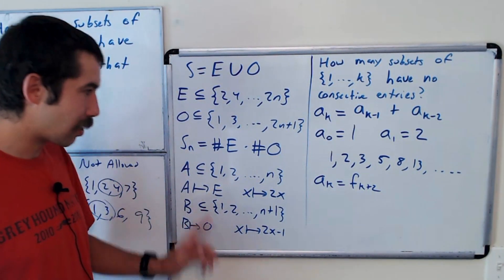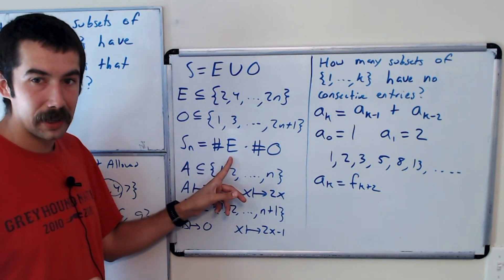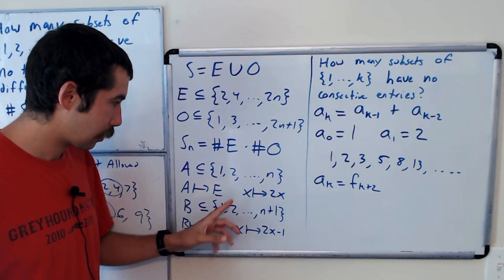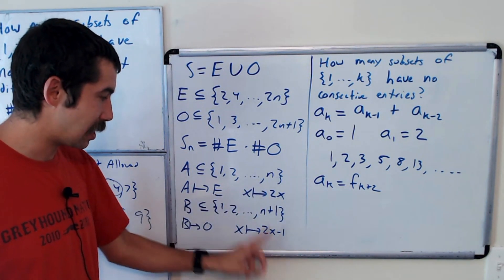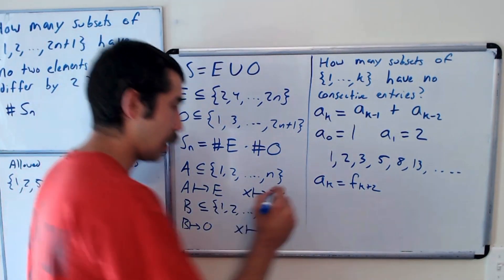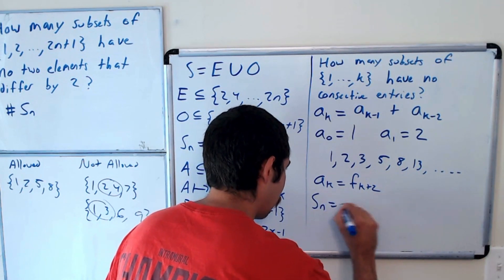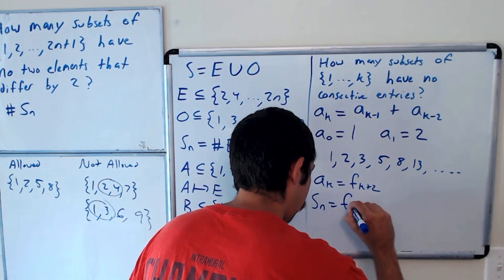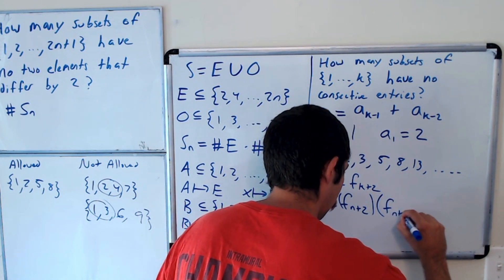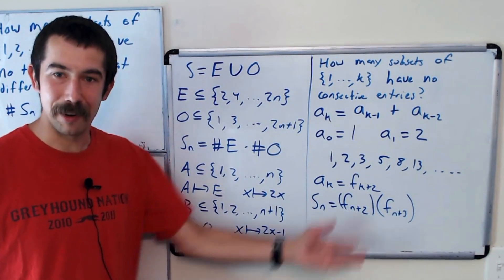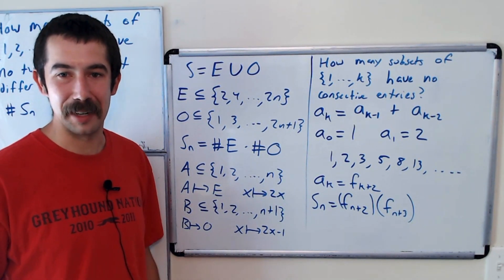And then to answer our question, even would be A sub N, odd would be A sub N plus 1. So S sub N is equal to F sub N plus 2 times F sub N plus 3. It's the product of consecutive Fibonacci numbers.